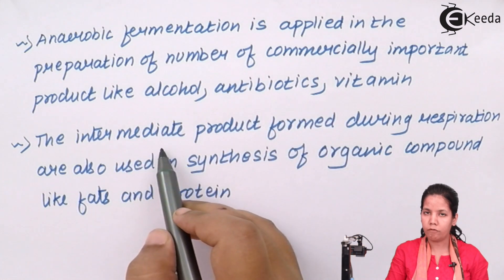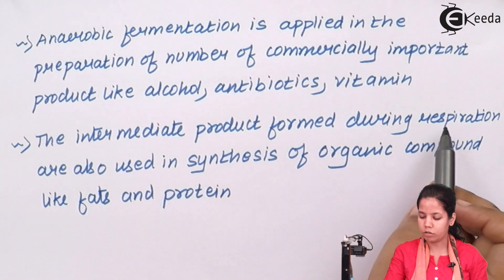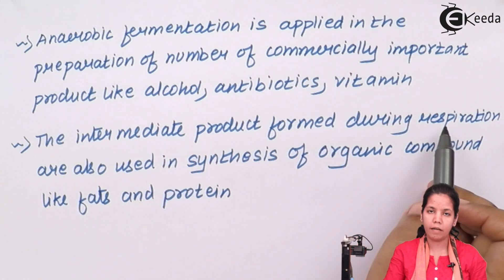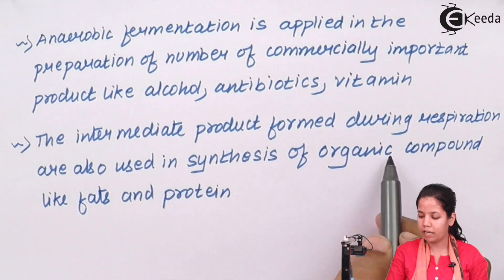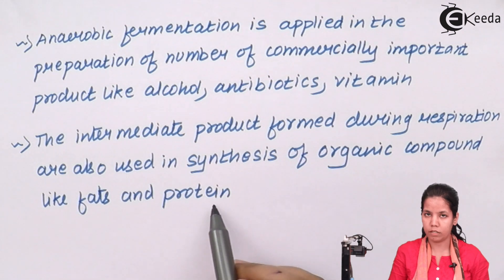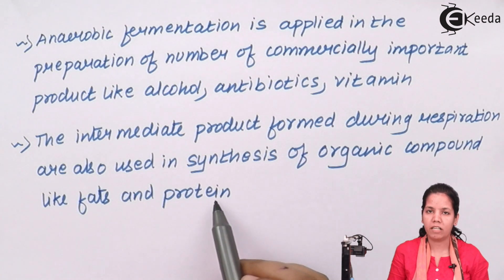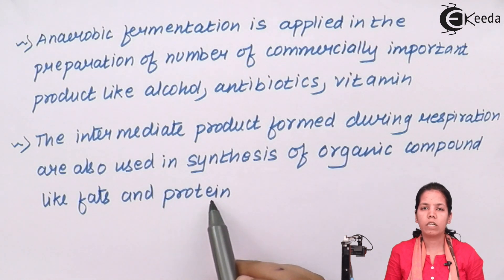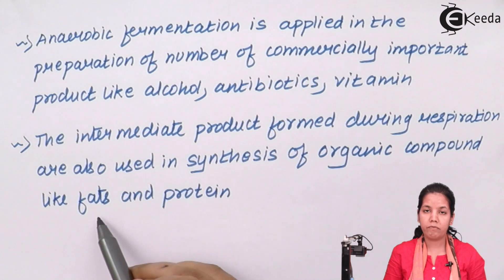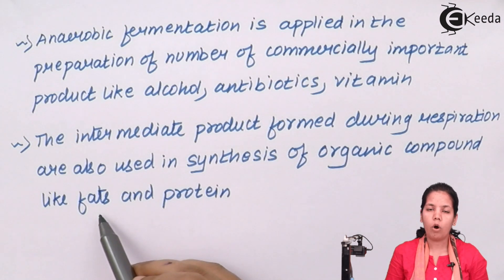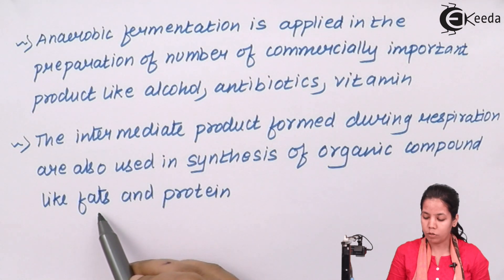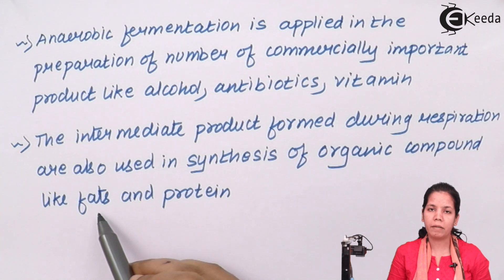The intermediate products formed during the respiration process — whether aerobic or anaerobic — are used for the synthesis of organic compounds like fats and proteins. Especially during protein formation, when amino acids are linked together in a polypeptide chain, proteins like arginine, methionine, and serine may use these organic compounds. Unsaturated, monosaturated, disaturated, or polyunsaturated fats may use these compounds for forming peptide linkages in proteins and fatty acid linkages in fats.